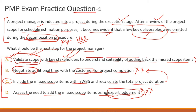The correct answer is option C: include the missed scope elements within the WBS and recalculate the total project duration. Once you have recalculated it, you might find you are in a comfortable position — the delay can be managed with the risk buffer already in the schedule. Or it may become clear you need to request an extension. Either way, you'll have the rationale and assessment to support your case. It will also be a lesson learned for avoiding missed scope elements in the future. Going by the logic discussed for all four options, option C is the most reasonable and rational approach.